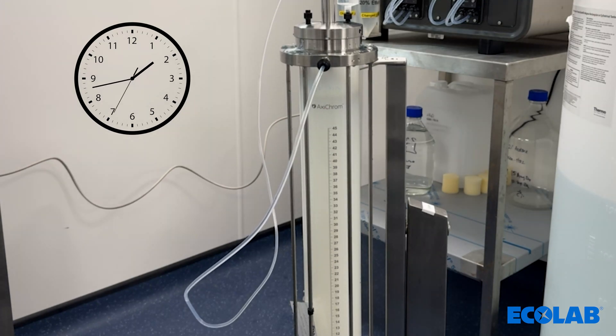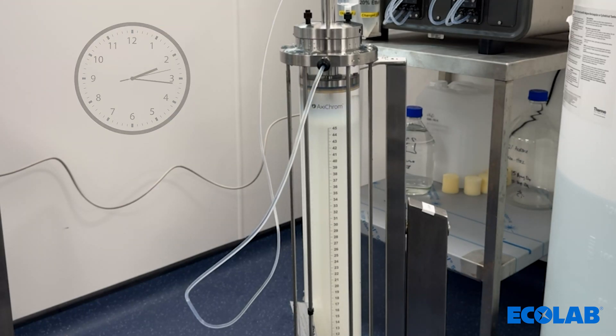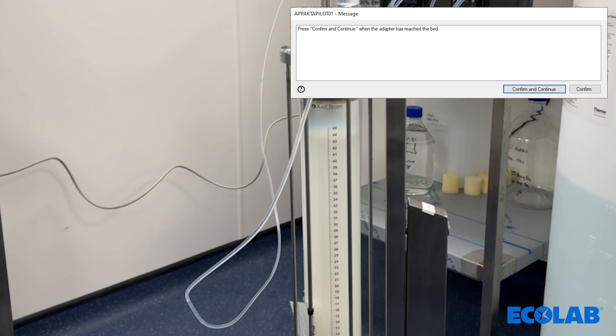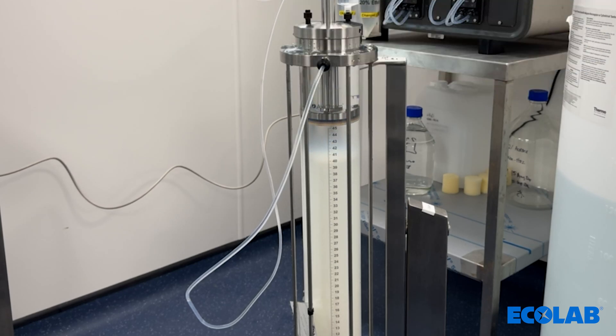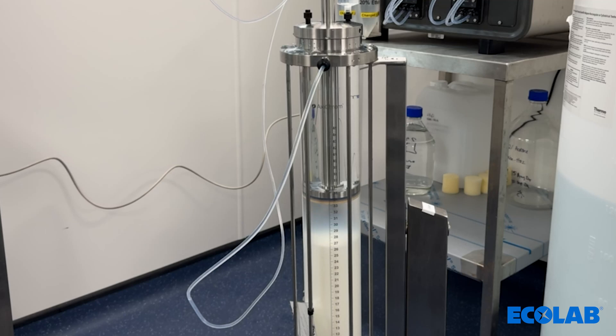As the adapter begins to lower, the bed will consolidate and form a bed. When the adapter hits the bed, you are required to press confirm and continue on the computer unicorn prompt for when the adapter reaches the bed. This step is important as it will ensure the correct packing factor is applied to the resin bed. This then tracks the compression of the bed as this prompt informs the software where a packing factor of 1.0 is and will compress the bed to the set packing factor.